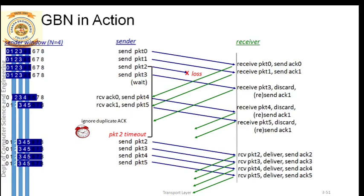The main concepts of Go-Back-N are: ordered delivery is expected at the receiver side, cumulative acknowledgement concept is used, and a sliding window allows multiple packets to be transmitted at once. The only drawback is that during retransmission, not just one packet but multiple packets are retransmitted unnecessarily, because the receiver does not store correctly received out-of-order packets and simply discards them.